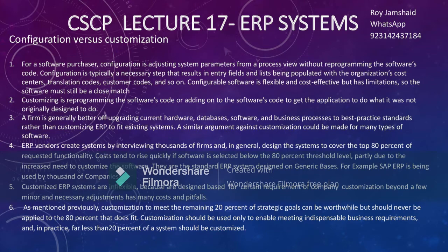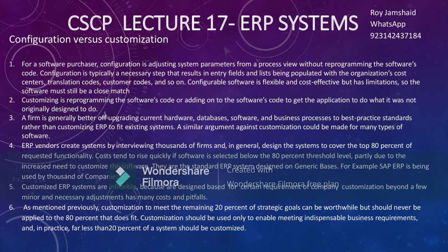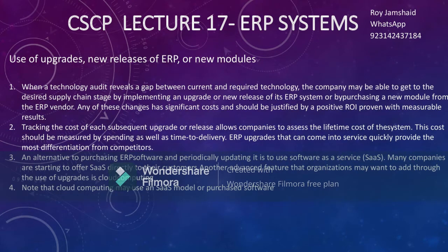Remember this very important point: whenever you purchase an ERP, it should fulfill at least 80% of your requirements. For the remaining 20%, you go for customization. Customization means reprogramming the software code — or adding to it — to make the application do what it was not originally designed to do. This is very expensive. Ultimately, you should modify your systems to align with the ERP through configuration, because the ERP is designed after extensive research.